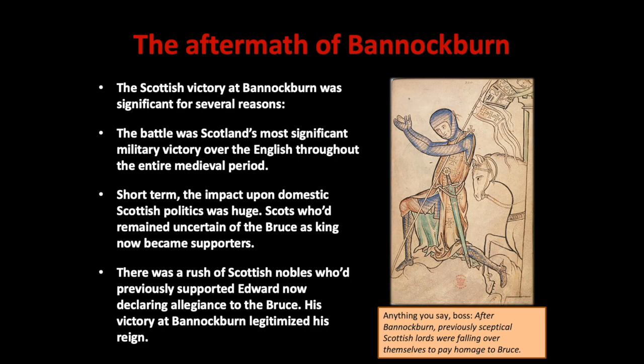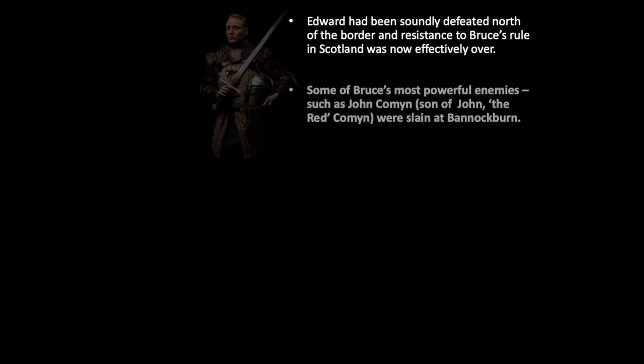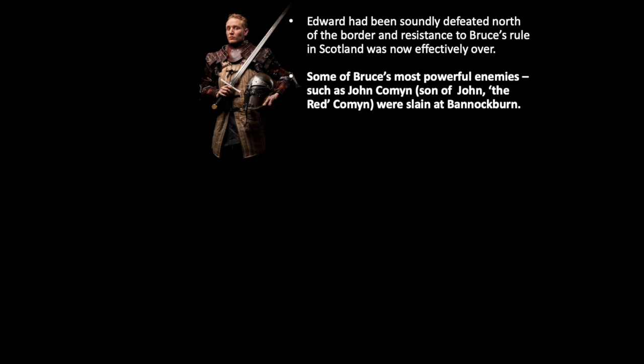There was a rush of Scottish nobles who had previously supported Edward now declaring their allegiance to Bruce. His victory at Bannockburn legitimised his reign — no longer was he an upstart, a rebel, a pretender. Bruce was now a proven, effective leader recognised by many as the real and legitimate King of Scotland. Edward had been soundly defeated north of the border, and resistance to Bruce's rule in Scotland was now effectively over. As a further bonus, some of Bruce's most powerful enemies — such as John Comyn, son of John the Red Comyn whom Bruce had killed in Greyfriars Kirk in 1306 — were slain at Bannockburn, removing further thorns from his side.